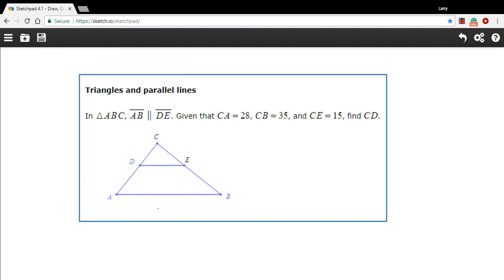In this problem, we have a triangle that's been cut by a line that they're telling us is parallel to this side of the triangle down here. When you do that with a triangle, you cut it into a smaller triangle here with a line that's parallel to that other side. It creates a similar triangle.